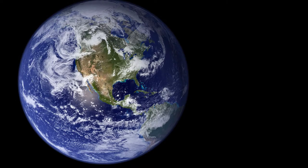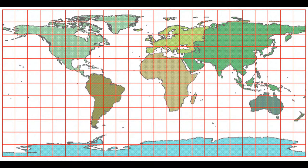The Earth. Our home. A round sphere. A ball floating in space. So if Earth is a ball, how do map makers flatten out the Earth to create maps?